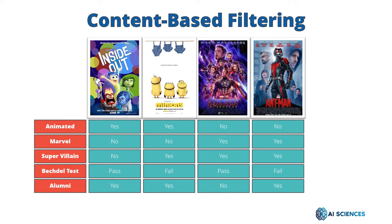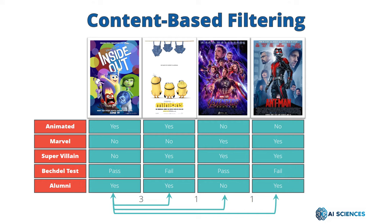One thing you can notice is that all these features or properties are actually based on the content — that is, our movies. Let's say we already watched Inside Out and we liked that movie. If we compare Inside Out with Minions, we can see three properties matched. If we compare Inside Out with Avengers, one property matched — the Bagdell test. And if we compare Inside Out with Ant-Man, one property matched, which is Alumni.